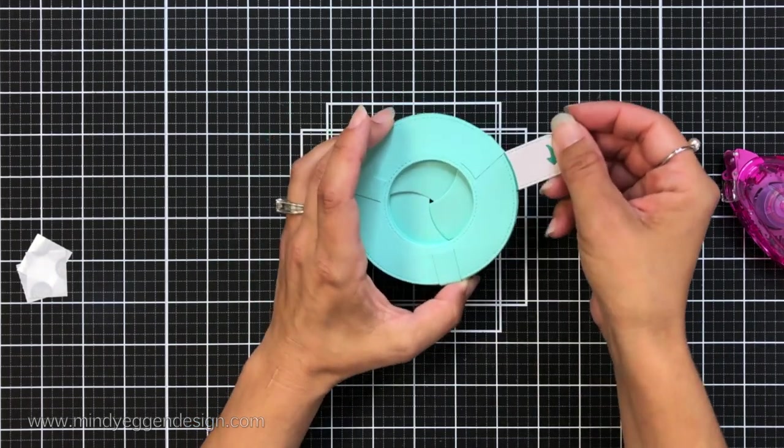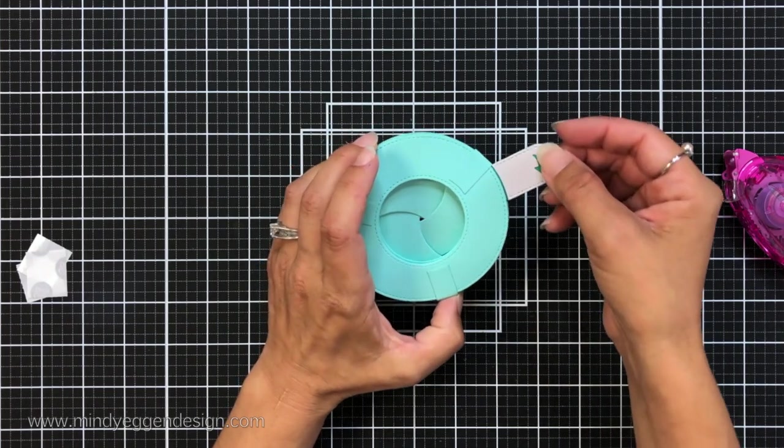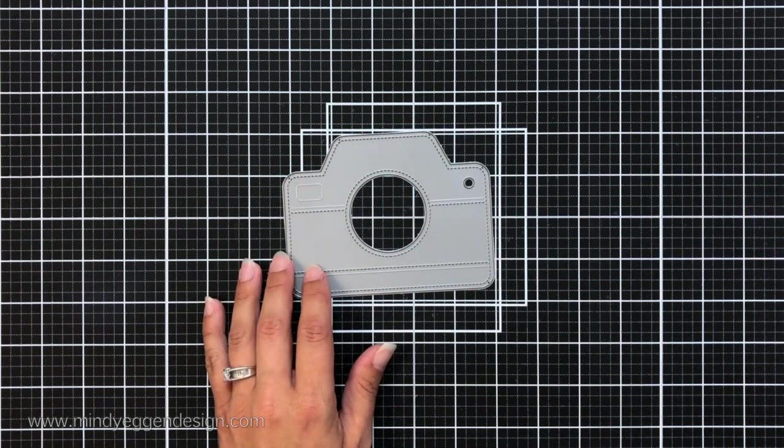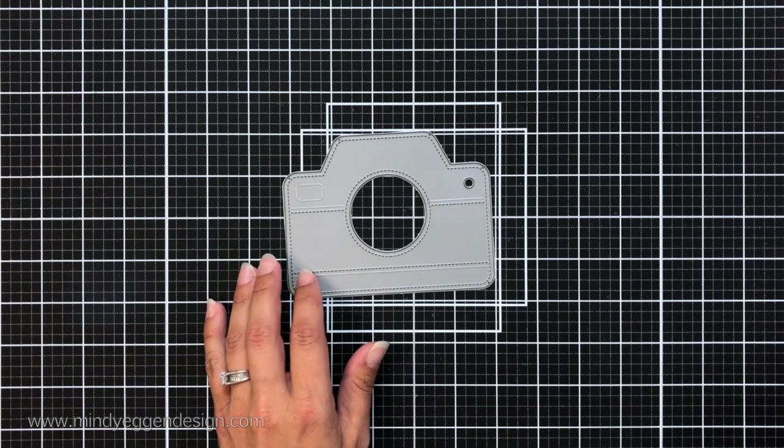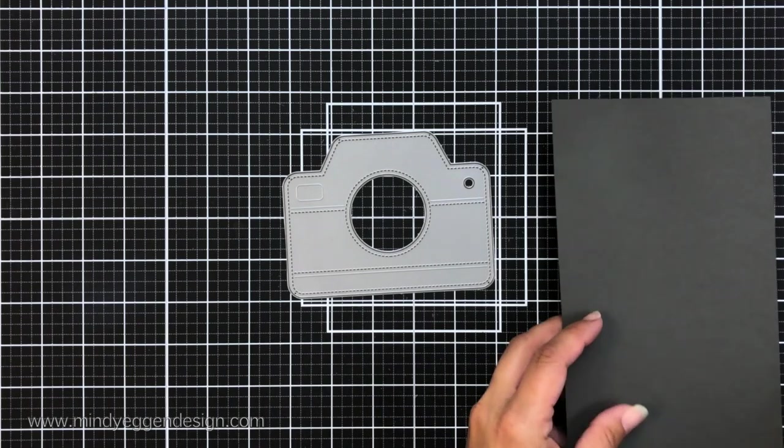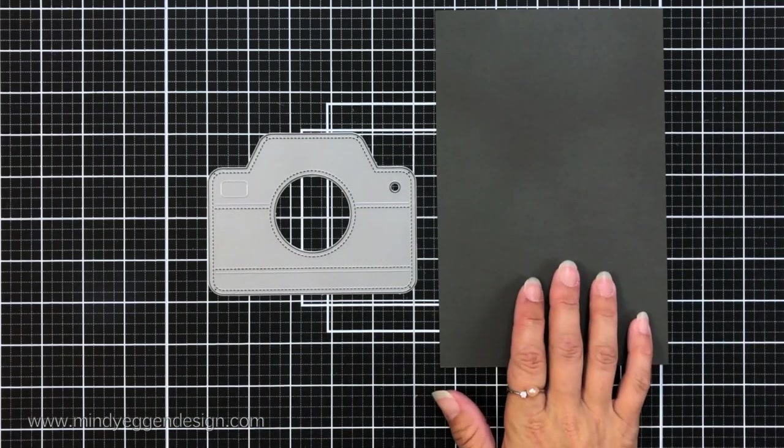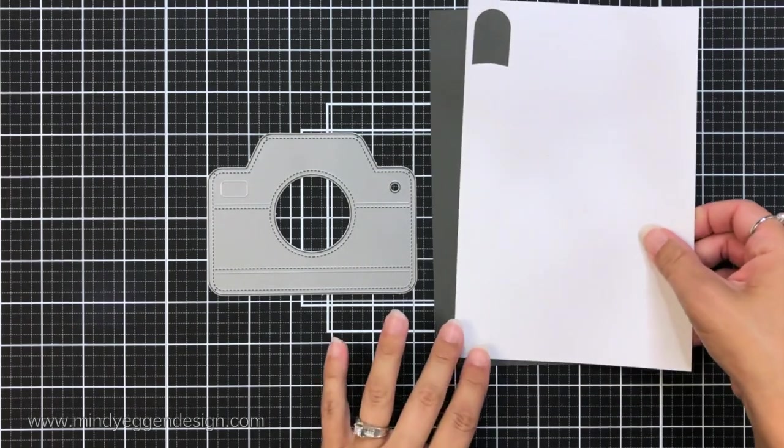Then I'll move on to working on the camera. I'm taking the magic iris camera and I'm actually going to be die cutting it twice. I wanted to add two tones to it. You could do this out of pattern paper or any other color of cardstock but I'm going to die cut this from storm cloud and fog cardstock.